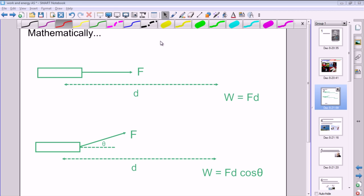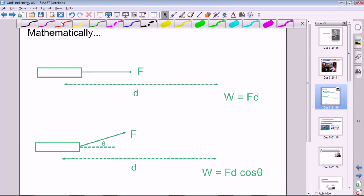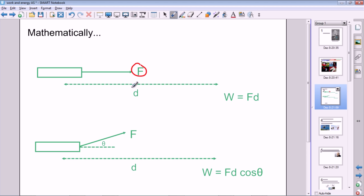Okay, so here are two examples where we've got forces acting in various directions compared to the motion. In this top one here, the force and the motion - the distance moved or the displacement - are in the same direction. So here it's just a case of multiplying the two together, so work equals force times distance, which is probably what you remember from GCSE.